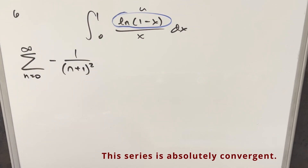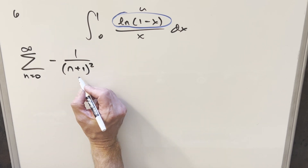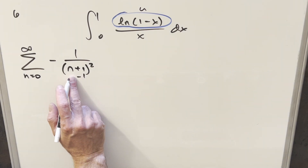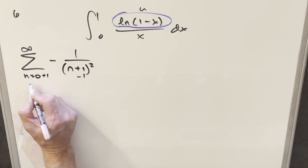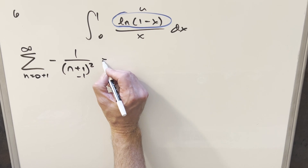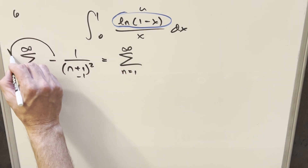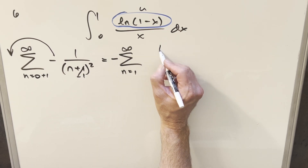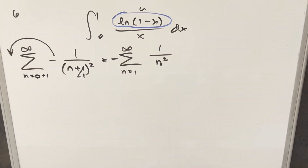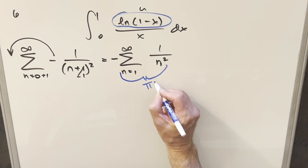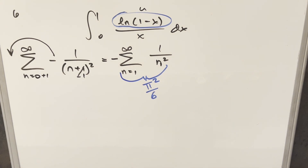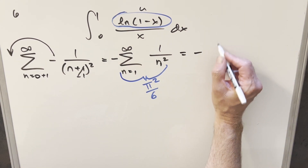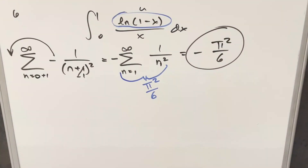To simplify, we do an index change: subtract 1 from n and shift the lower bound to n equals 1. Pulling the minus sign out front, the sum becomes the sum from n equals 1 to infinity of 1 over n squared. This is the Basel problem, whose value is pi squared over 6. So the final answer is minus pi squared over 6. There you have it — a good problem from the UK Integration Bee, sample number 6. Thanks everyone for watching.